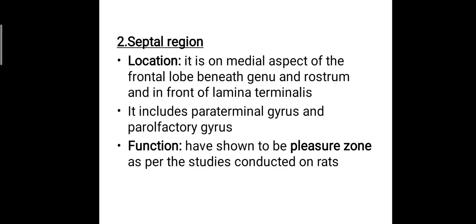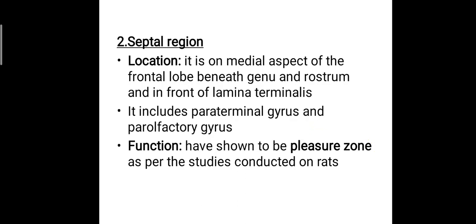The septal region, or septal area, is on the medial aspect of the frontal lobe, beneath the genu and rostrum of the corpus callosum, and in front of the lamina terminalis. It includes the paraterminal gyrus and the parolfactory gyrus. Its function is shown to be the pleasure zone, as demonstrated by experiments conducted on rats.